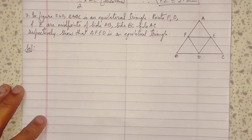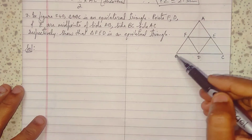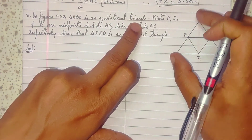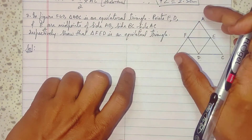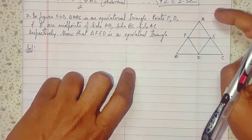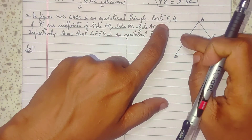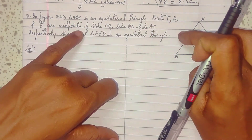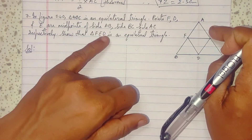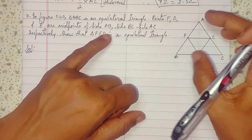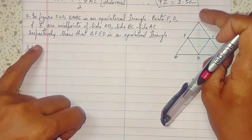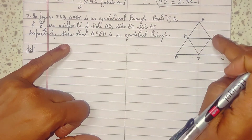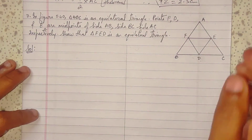Third question. Triangle ABC is an equilateral triangle, meaning AB equals BC equals AC. Points F, D, E are the midpoints of sides AB, BC, and AC respectively. Show that triangle FED is an equilateral triangle.